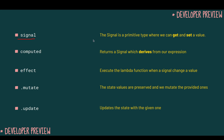We have the signal, which is a primitive type where we can get and set a value. Then we have computed, which returns a signal derived from an expression. We can also have an effect, which executes a lambda function when a signal changes its value. And we also have mutate, where the state values are preserved and we only mutate the provided ones, as well as the update method, which updates the state with a given value.